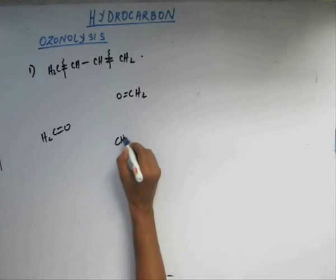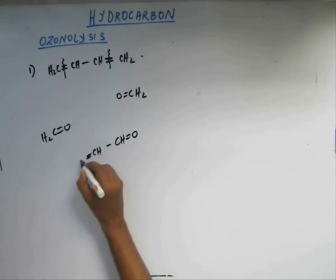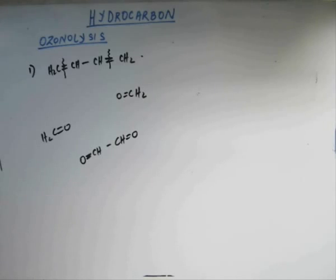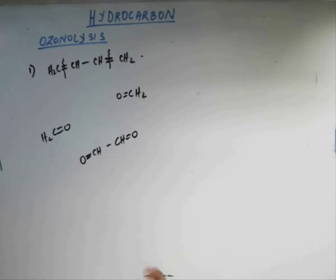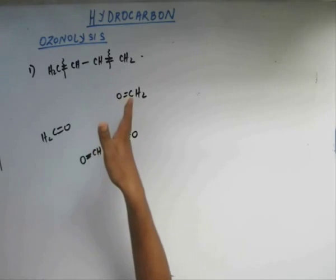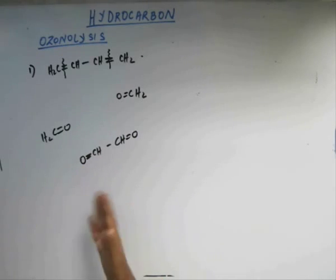So what you are going to get would look something like this — you are going to get 1,2-ethanedial. So when you have multiple pi bonds, you do the ozonolysis on all the pi bonds. It happens one by one, but for writing the product you can break them simultaneously, and these will be the three products that you will get out of 1,3-dibutene.